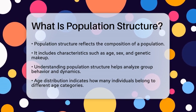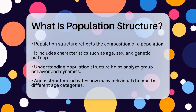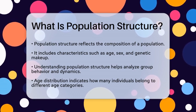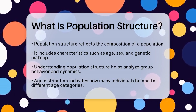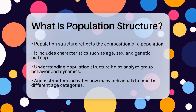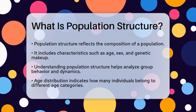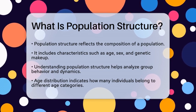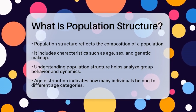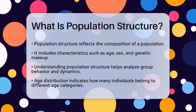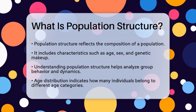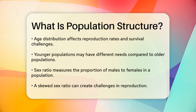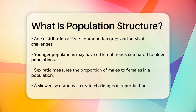Population structure refers to the composition of a population, including various characteristics such as age, sex, and genetic makeup. It provides a framework for understanding how these factors influence the behavior and dynamics of a group.